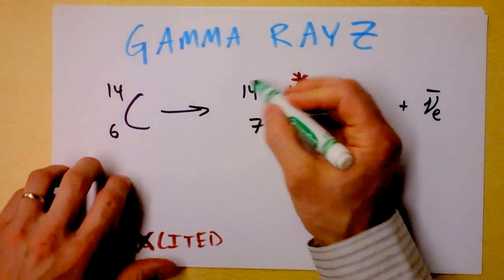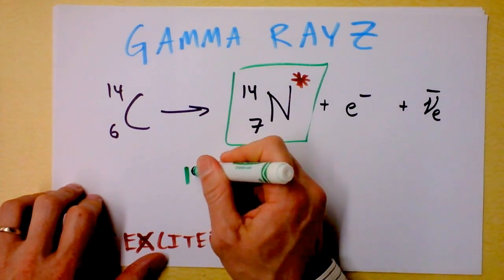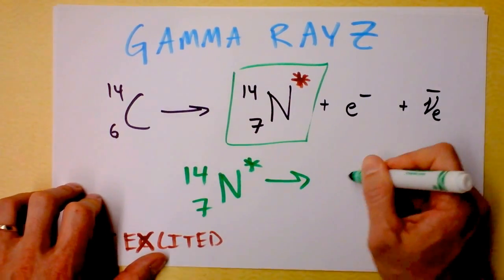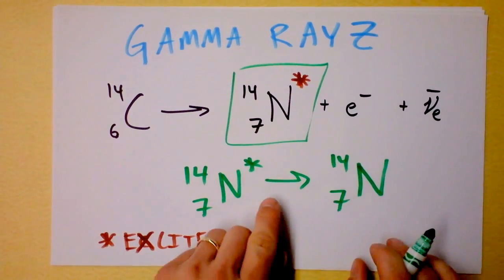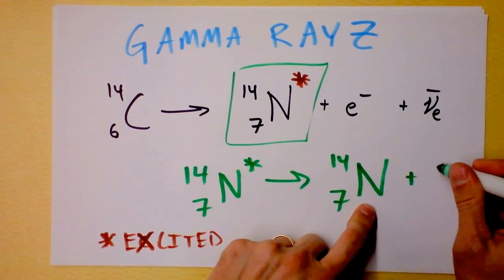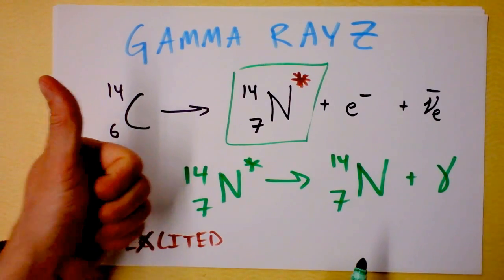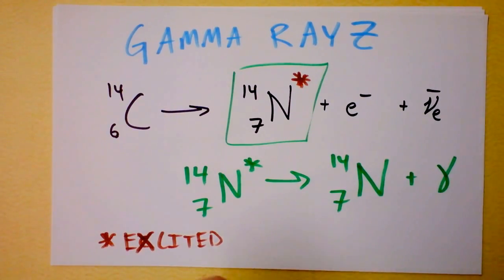Look at this though. This is excited nitrogen. And what will happen to excited nitrogen-14 is that it will decay into regular nitrogen-14, and the only way you can tell that it's decayed is a gamma ray shoots off. Gamma rays. They're not charged, they don't really have mass. They must be - what do you think they are? Light? Yeah.